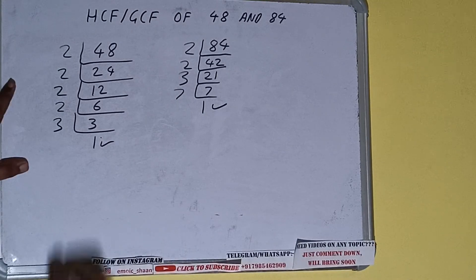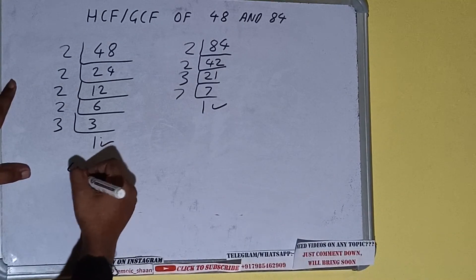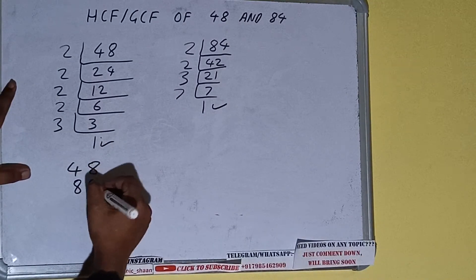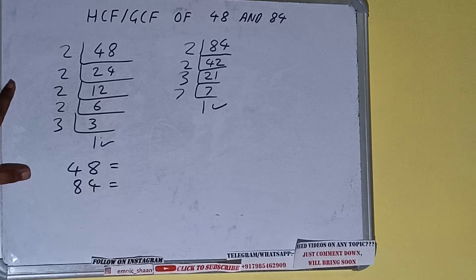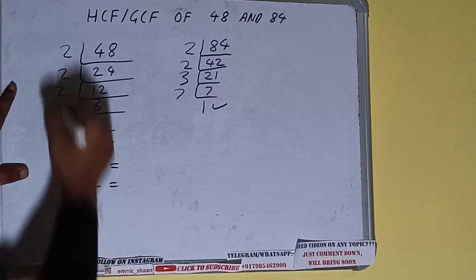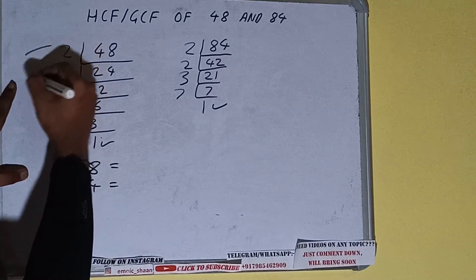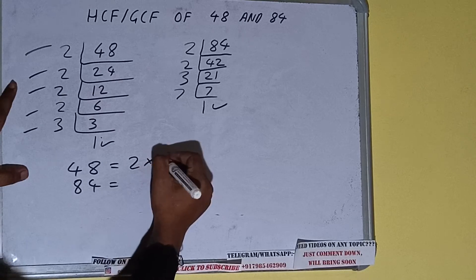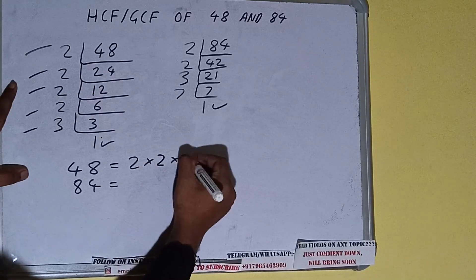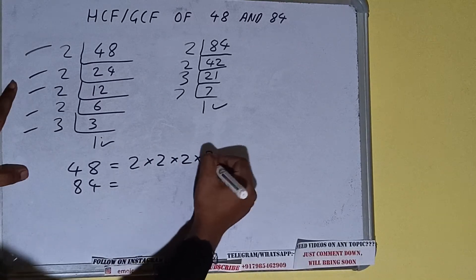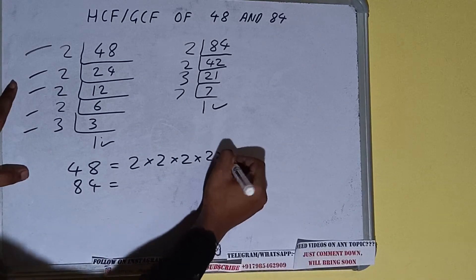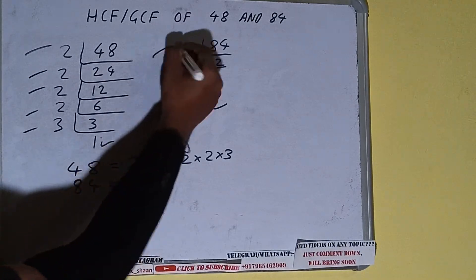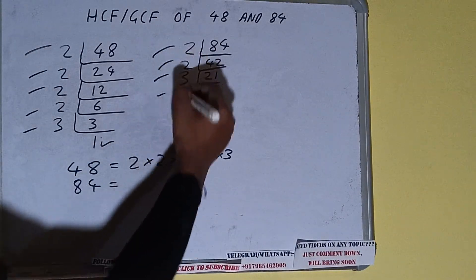Now we need to write down each of the numbers with their respective prime factors. For 48, the prime factors we got are: 2, 2, 2, 2, and 3. For 84, the prime factors we got are: 2, 2, 3, and 7.